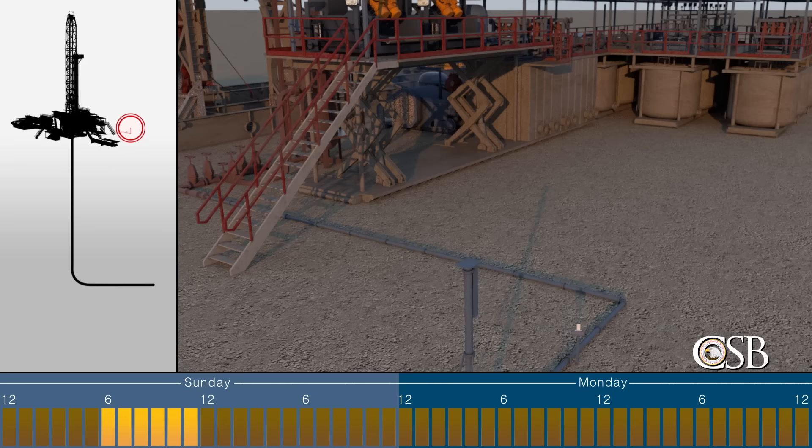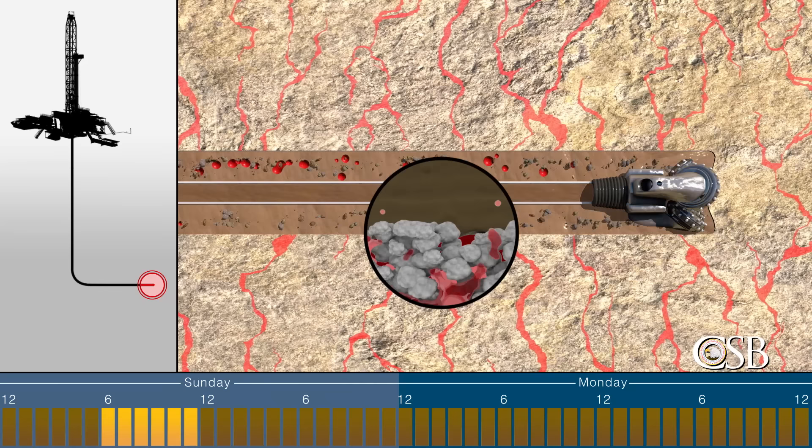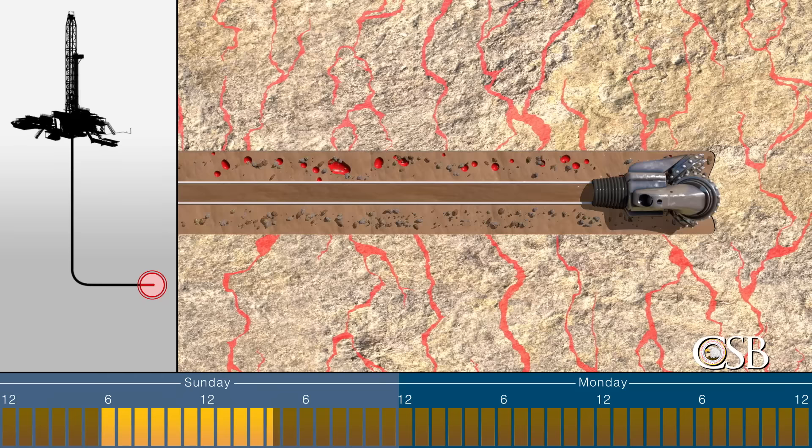The separated gas was then routed to a flare to safely burn it. The size of the flare indicated that there was a significant amount of gas in the mud and that the well had likely become underbalanced, meaning that pressure from the mud was not keeping gas out of the well as intended. The crew continued drilling underbalanced until 3:30 p.m., when they stopped because the drill bit had become worn and needed to be replaced.